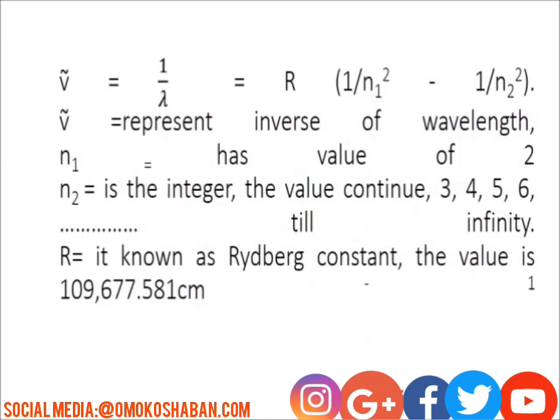Here is our equation. V, which represents the inverse of wavelength, equals R times one over N₁ squared minus one over N₂ squared. V represents the inverse of wavelength. N₁ has a value of two, and N₂ is an integer whose values continue as three, four, five, six, until infinity. R is known as the Rydberg constant. The value of R is 109,677.581 cm⁻¹.